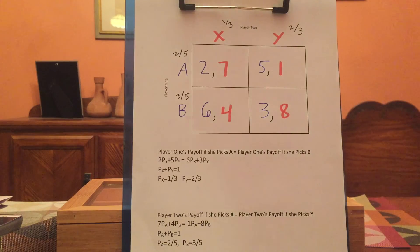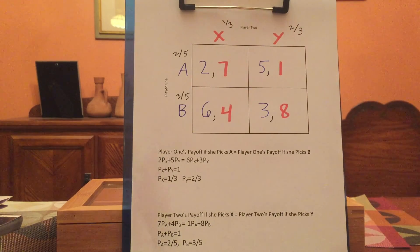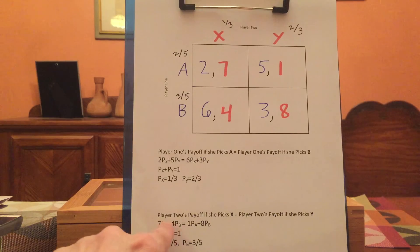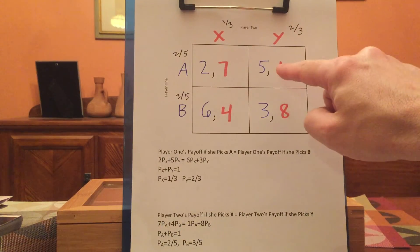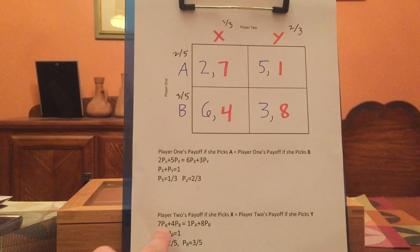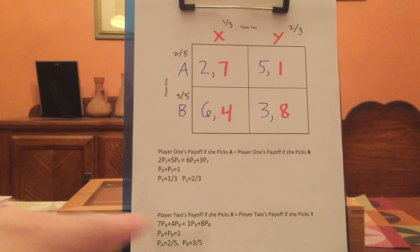Now let's solve for player two. For player two to be willing to mix, she must get the same average payoff from playing X as from playing Y. If she plays X, she gets seven times p-sub-a plus four times p-sub-b. If she plays Y, she gets one times p-sub-a plus eight times p-sub-b. So if this equation holds, player two is willing to randomize. We know the sum of probabilities for player one has to equal one, giving us two equations and two unknowns to solve.